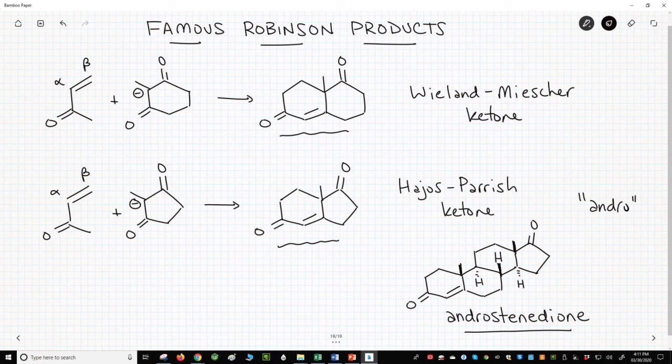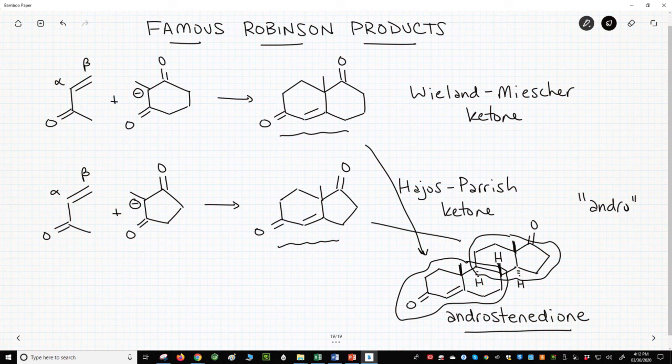You can see that the Robinson annulation gives quick access to parts of this steroid structure. So the Robinson annulation is a very powerful reaction, but it has some limitations and finding good examples is sometimes difficult.